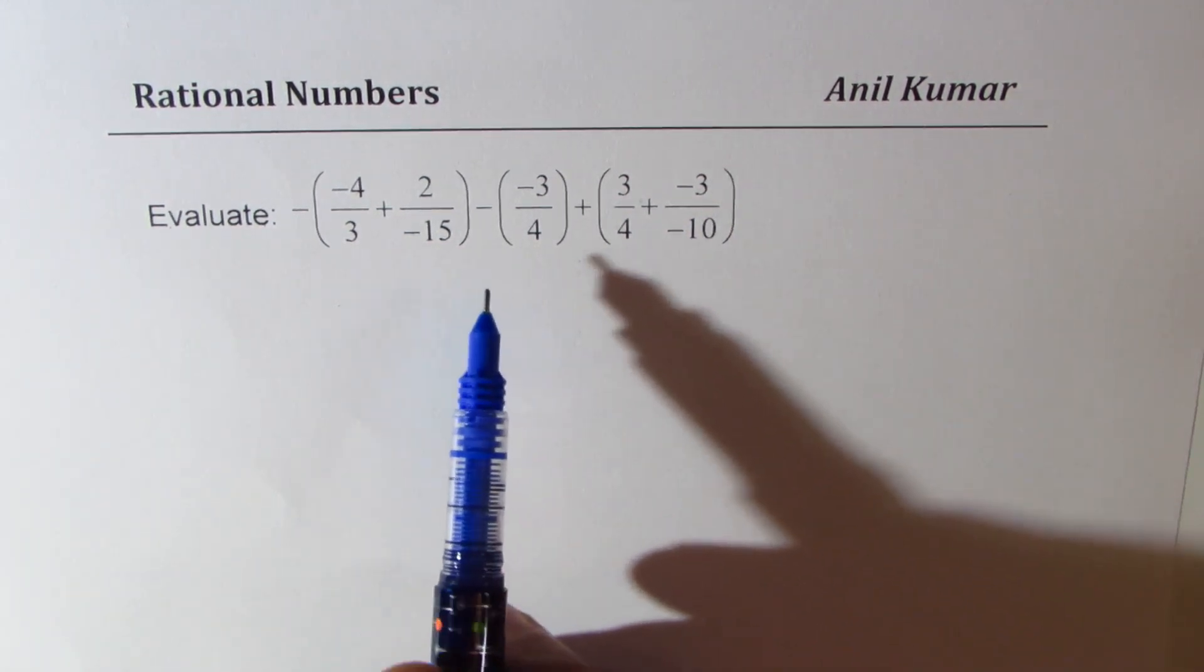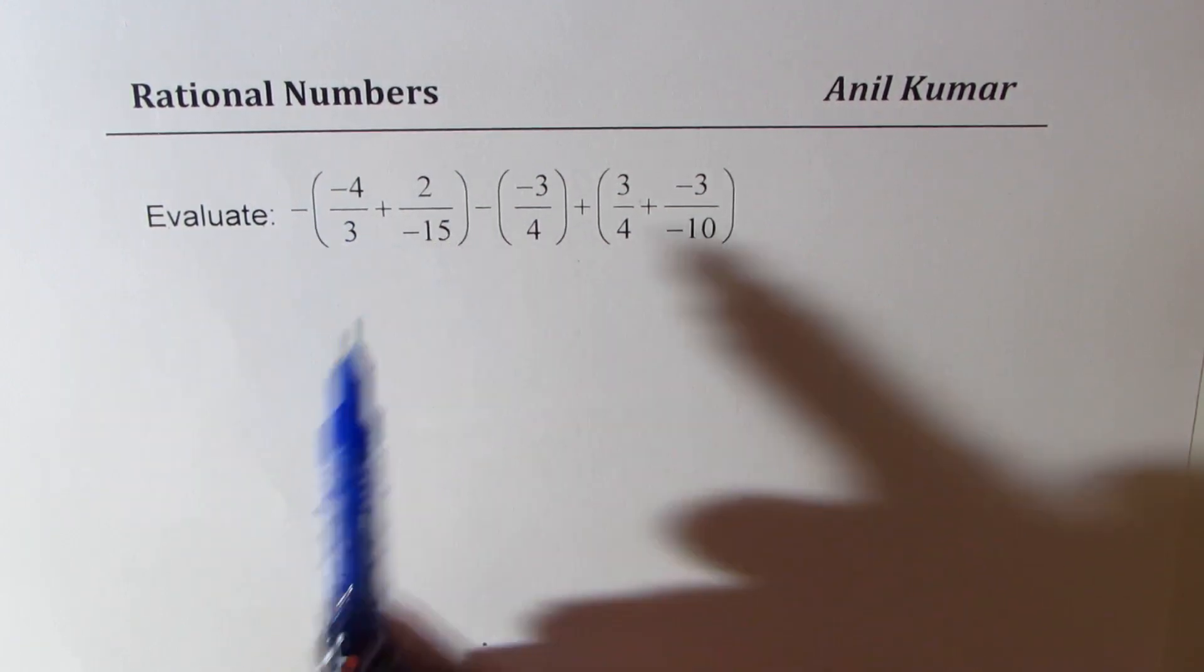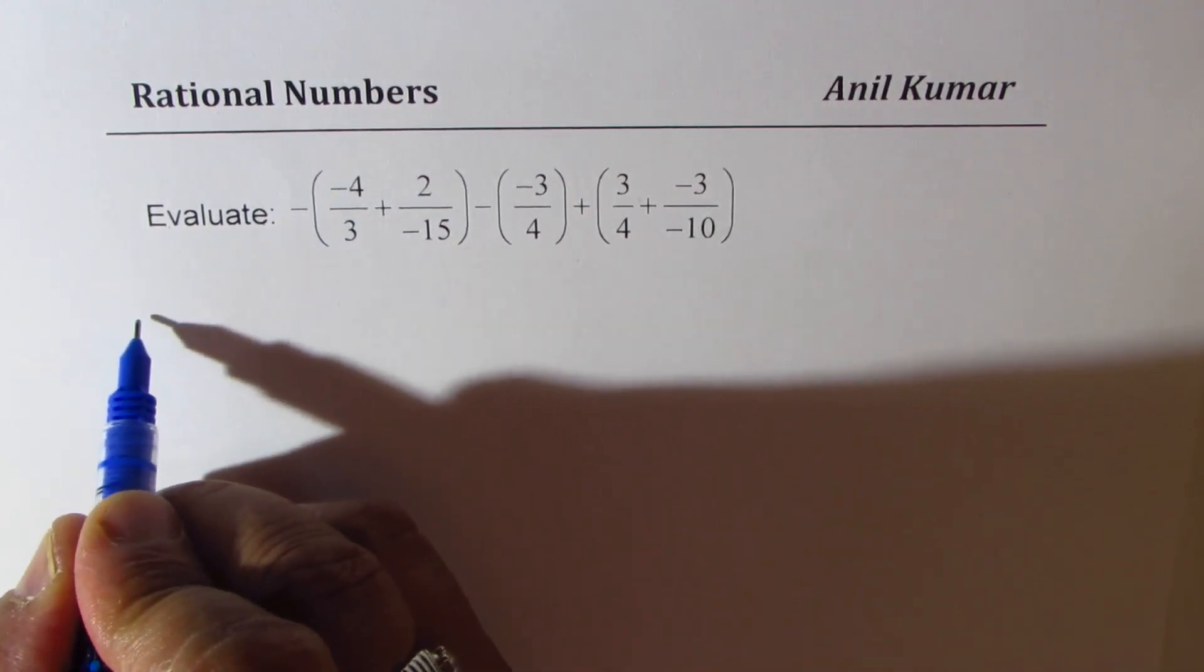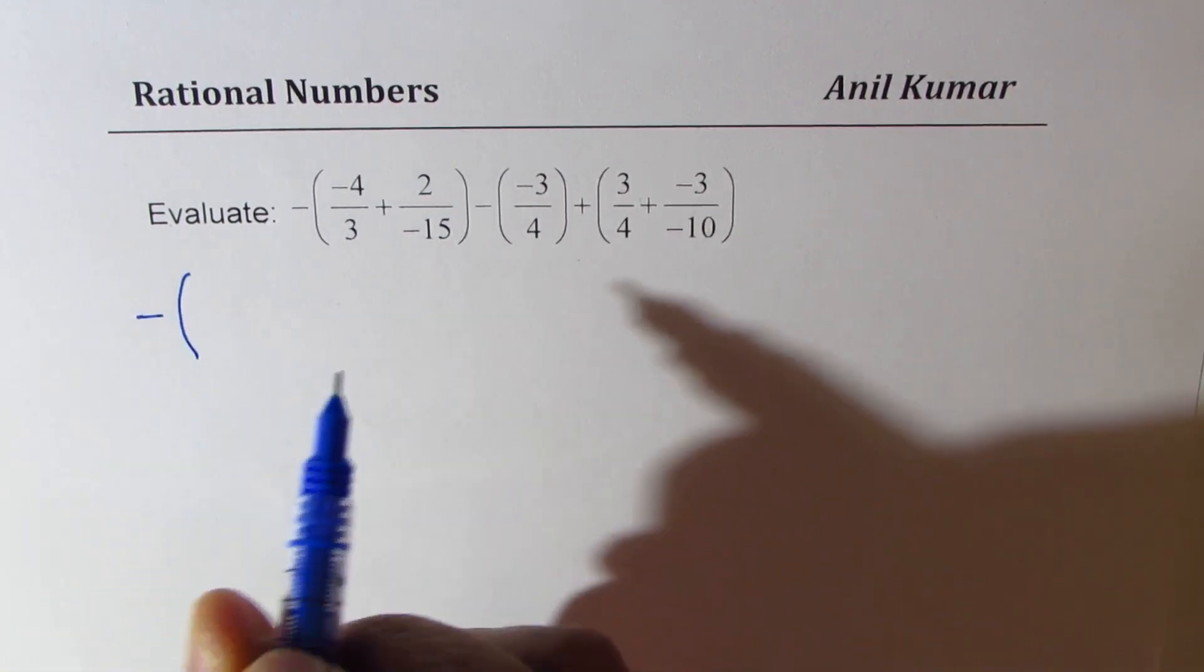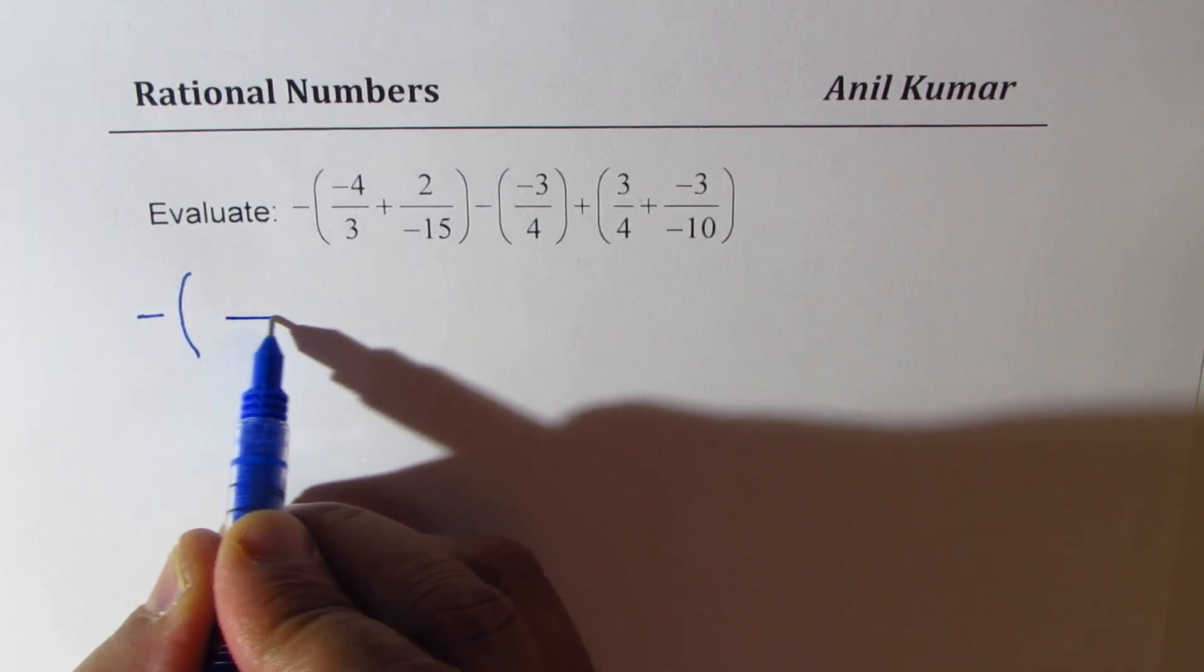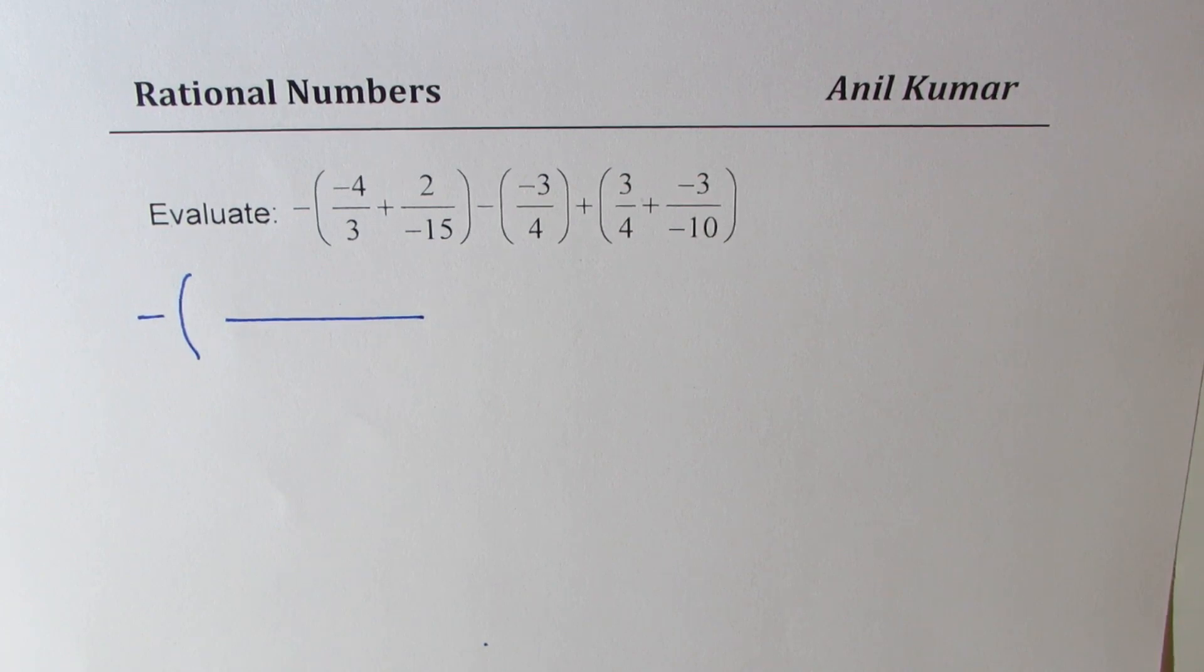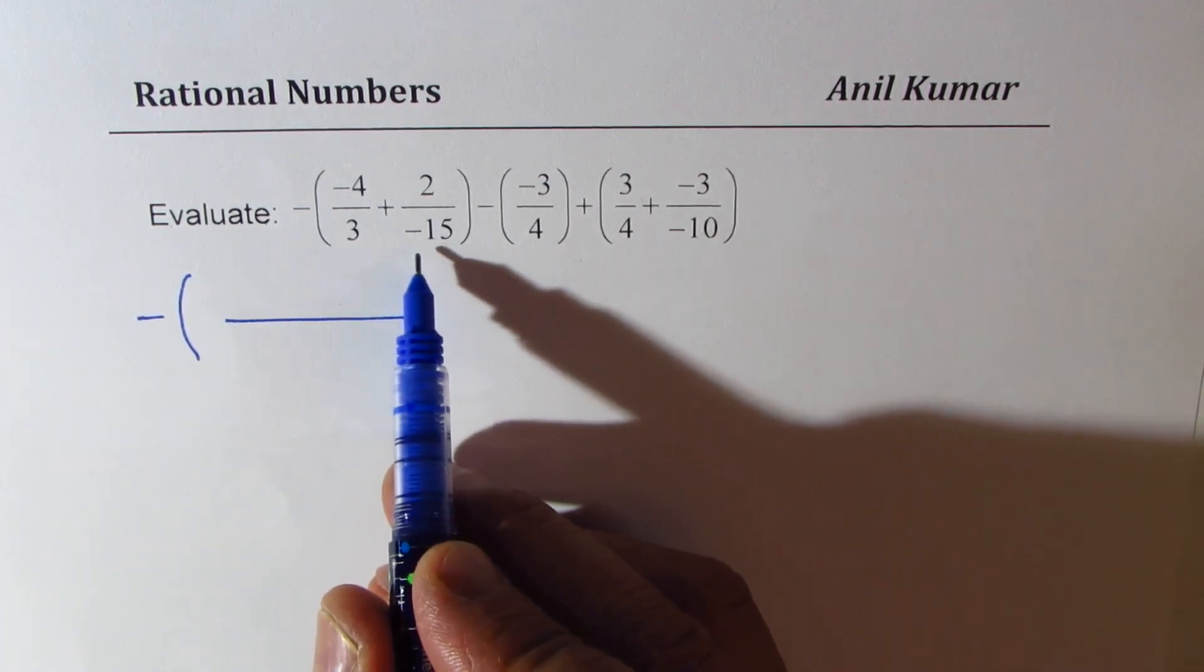Okay. Now, let's do the part in the brackets individually. Minus, we'll just keep that negative here. Now, 3 and minus 15, the denominator, you could take minus 15 as common denominator, right? Or, in this case, what should you do?